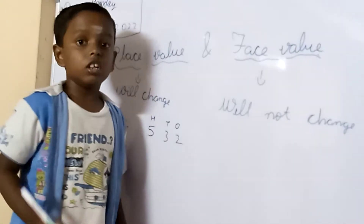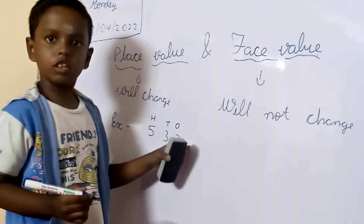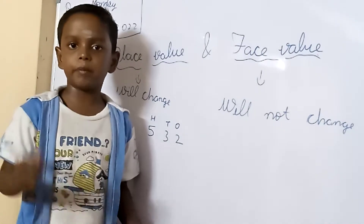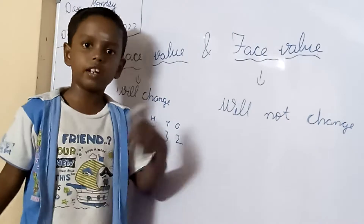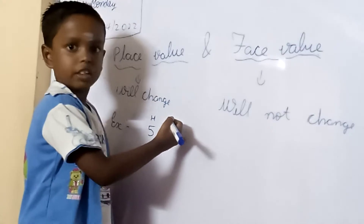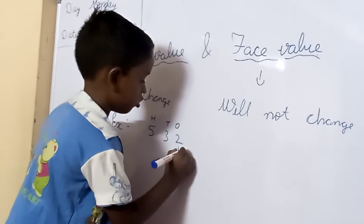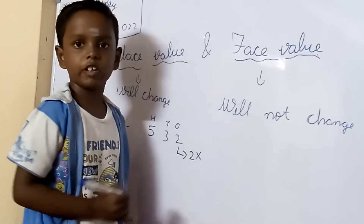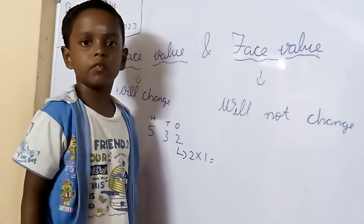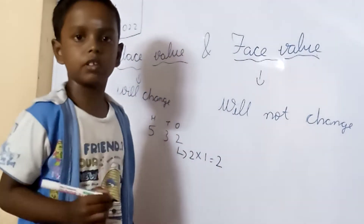In place value, we should multiply with 10. The digit given is 2. We should always multiply from right to left. The digit is 2 — what place value is given? 1. So, 2 multiplied by 1 is equal to 2.